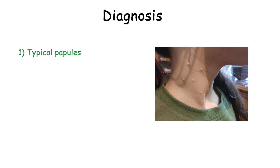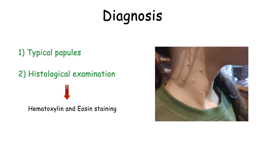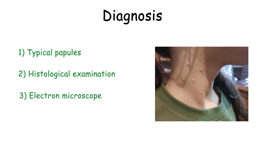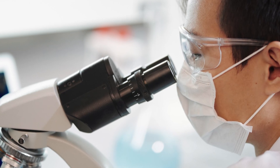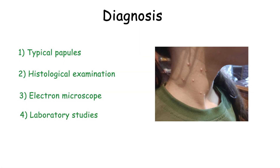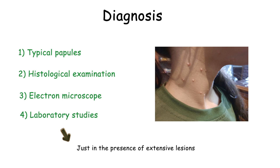The diagnosis of molluscum contagiosum is usually made by observing the typical papules with the characteristics explained before. If you are not sure about the diagnosis based upon symptoms alone, histological examination can confirm it. Hematoxylin and eosin staining can reveal keratinocytes containing cytoplasmic inclusion bodies, known as molluscum bodies. Another less common method is using an electron microscope to see pox virus particles in a biopsy sample. Laboratory studies generally cannot help. However, if the disease's origin is sexual, the patient should be evaluated for other sexually transmitted diseases; and if the patient has extensive lesions, laboratory studies should be performed to diagnose any possible immunodeficient condition.